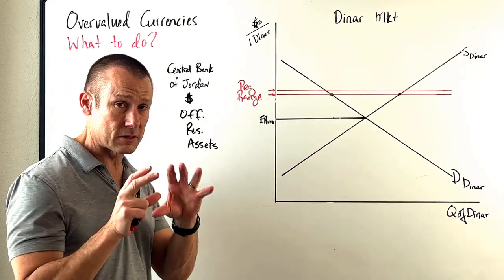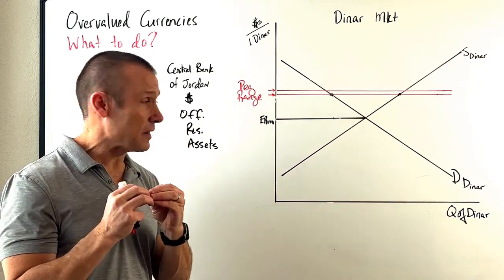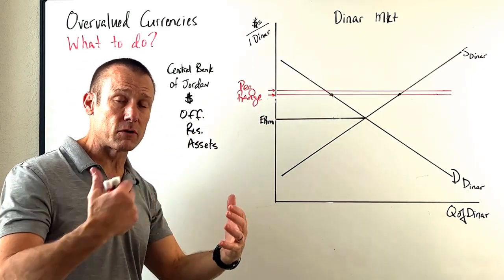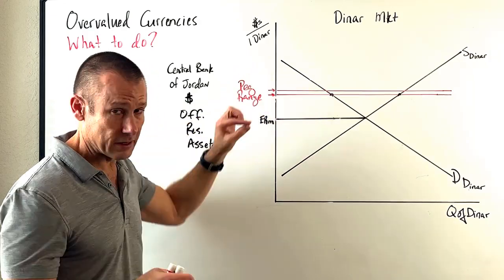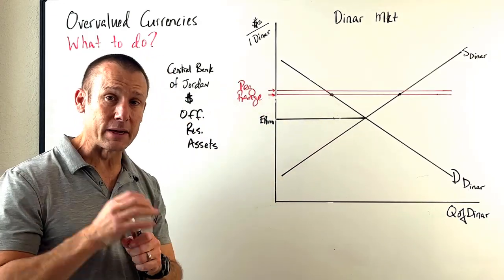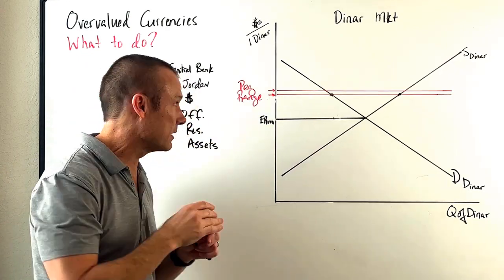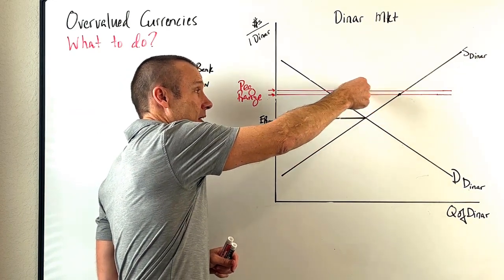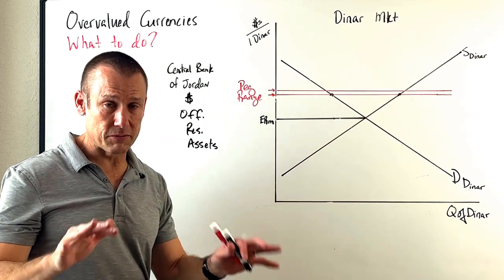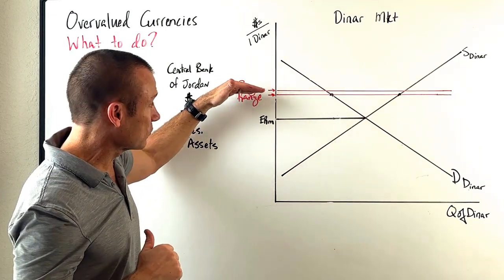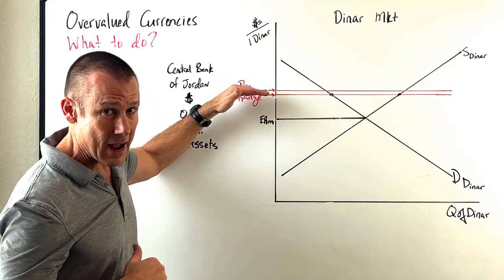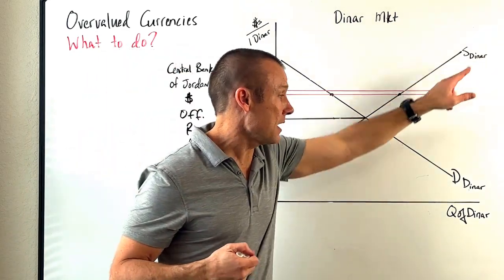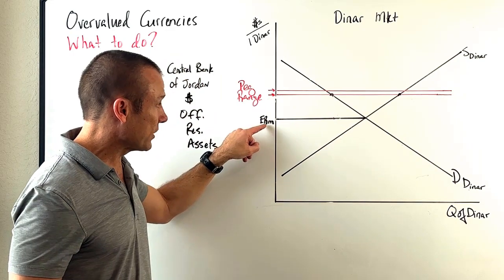When you look at this graph, Jordan's central bank has basically said here is my exchange rate range that I am guaranteeing — that I will convert dinar for dollars and dollars for dinar at. A peg is actually not a specific amount usually; it's a very narrow range. So if we can get supply and demand to be intersecting anywhere in this range, Jordan would be perfectly fine with that. But as you can see from the graph, that's not what market forces are saying the exchange rate should be — supply and demand are intersecting elsewhere.